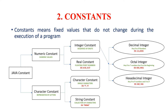The other division under Java constant is character constant. Character constants are represented by letters and are further divided into character constant and string constant. Character constants are single characters represented in single quotes, for example 't', 'u', 's'. String constants are a collection of characters represented in double quotes, for example "India".